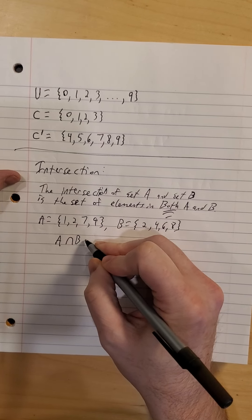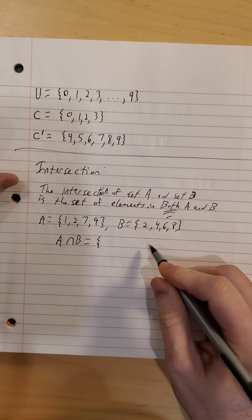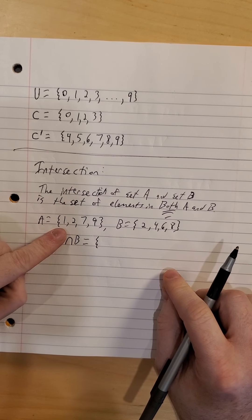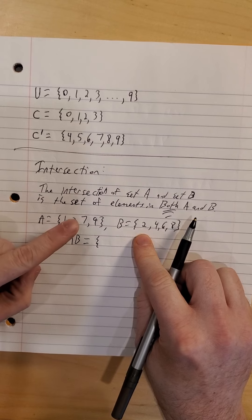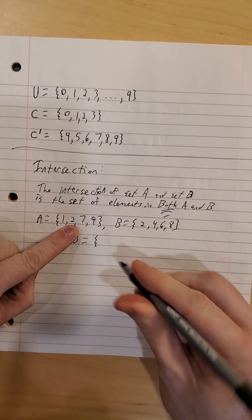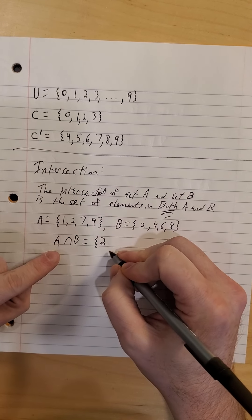A intersection B, set of elements that are in both lists at once. 1 is in A, 1 is not in B. 2 is in A, 2 is also in B. That goes into the intersection.